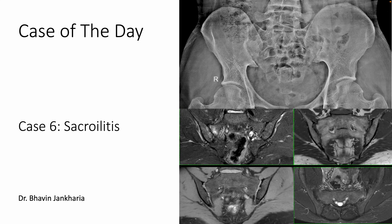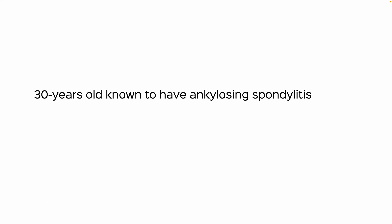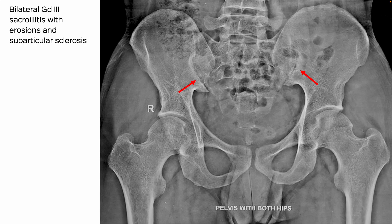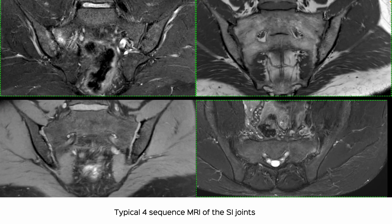Welcome to Case of the Day — we're on the sixth case, and today it is sacroiliitis. This is a 30-year-old known to have ankylosing spondylitis. The X-ray shows grade 3 sacroiliitis with erosions and subarticular sclerosis.